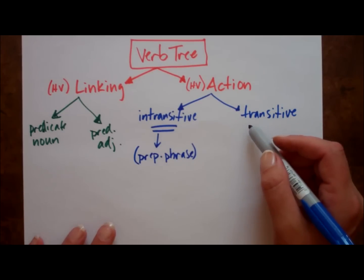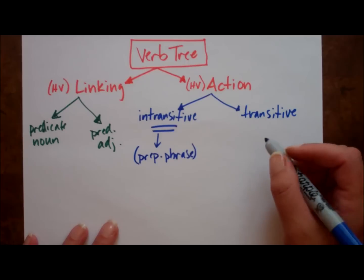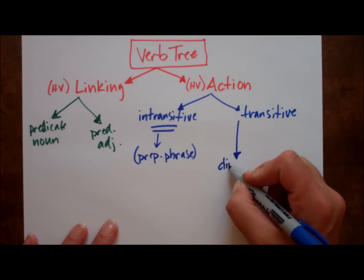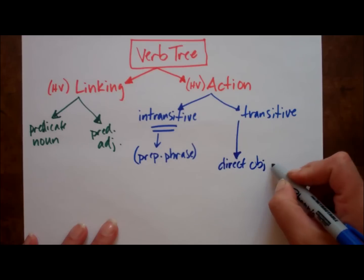If your verb is transitive, it must have a direct object. It's a necessary component.